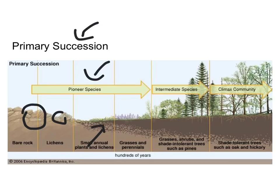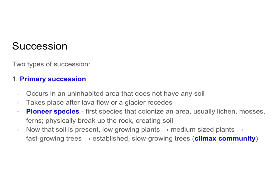Once soil is formed, that leads the way for small grasses. If a bird dropped a grass seed onto this developing soil, small grasses can grow. Those grasses die and are broken down by decomposers, adding nutrients, and eventually the soil can support small shrubs, then small trees. Smaller plants are replaced by bigger plants over time. Primary succession occurs in an uninhabited area without soil — after a lava flow or after a glacier recedes. The sequence goes: pioneer species, low-growing plants, medium-sized plants, fast-growing trees, then slow-growing trees. Once we've reached the slow-growing tree stage, that's called the climax community — the last stage in succession.